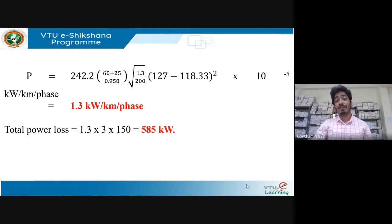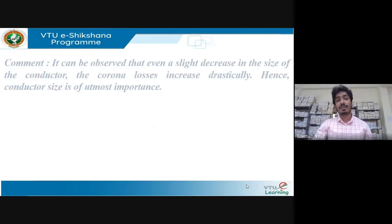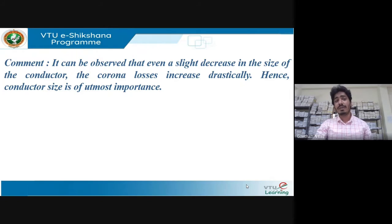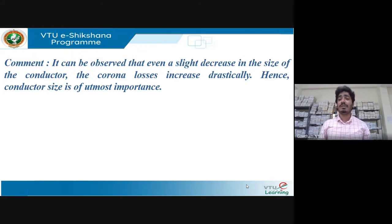The conductor diameter was decreased compared to the previous problem. The decrease in conductor size drastically affected corona loss — there was a significant rise in corona power loss. Hence, conductor size is of utmost importance; it is the most deciding factor for the phenomenon of corona and for determining the value of corona power loss.